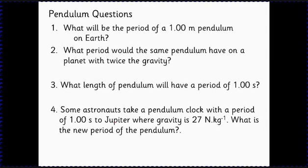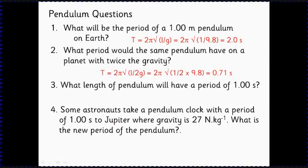Just a few worked examples. We've got the period of a one meter pendulum on Earth: just put in the equation T equals 2π root L over g, 2π times the square root of one for the length divided by 9.8 gives you two seconds. If it was the same pendulum but on a planet with twice the gravity, then gravity would now be 2 times 9.8, so we've got here 19.6 as the acceleration of gravity. The pendulum would be 0.71 seconds.